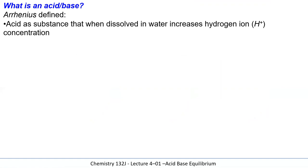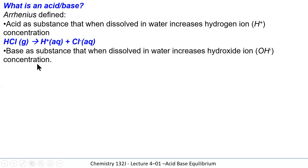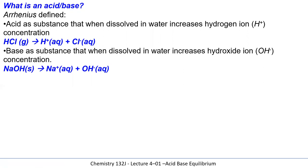Arrhenius defined an acid as a substance that when placed in water increases the hydrogen ion concentration. For example, hydrogen chloride gas dissolved in water produces hydrogen ions and chloride ions — the (aq) means dissolved in water. A base is a substance that increases the hydroxide ion concentration. If we take sodium hydroxide, present in drain cleaners, the sodium and hydroxide ions in the crystal separate, making positive sodium ions and negative hydroxide ions, increasing the hydroxide concentration according to Arrhenius.